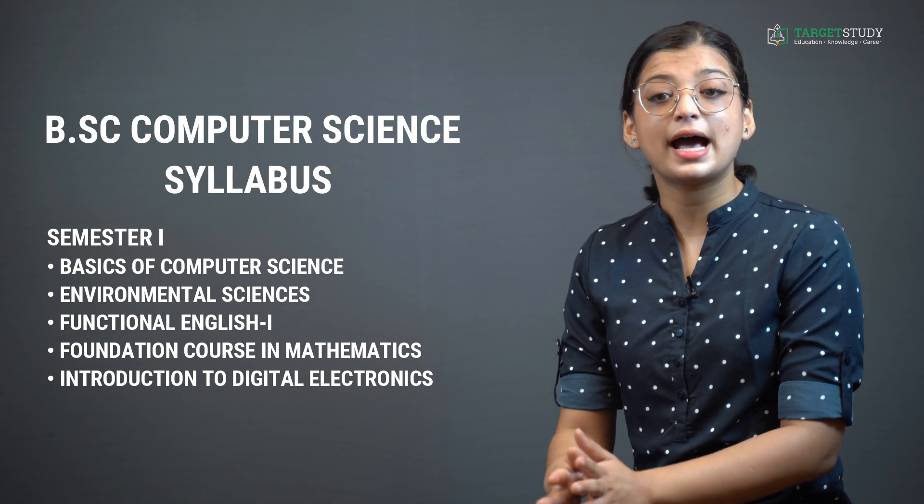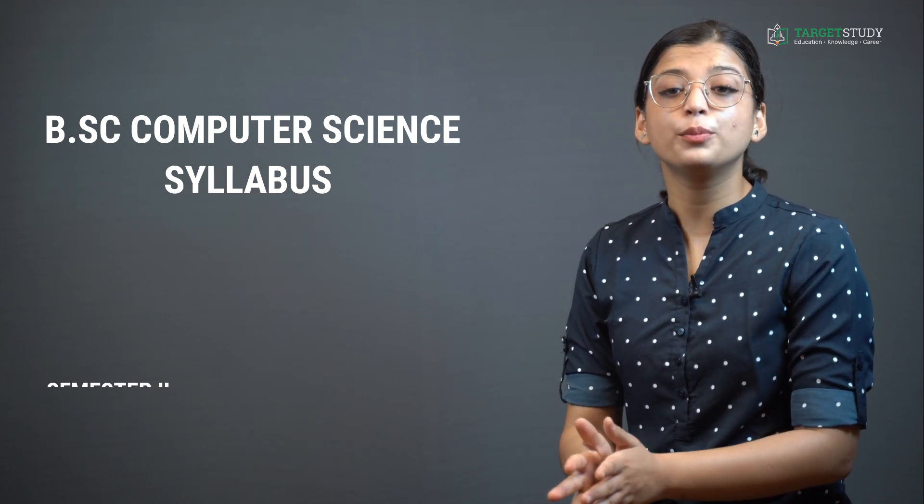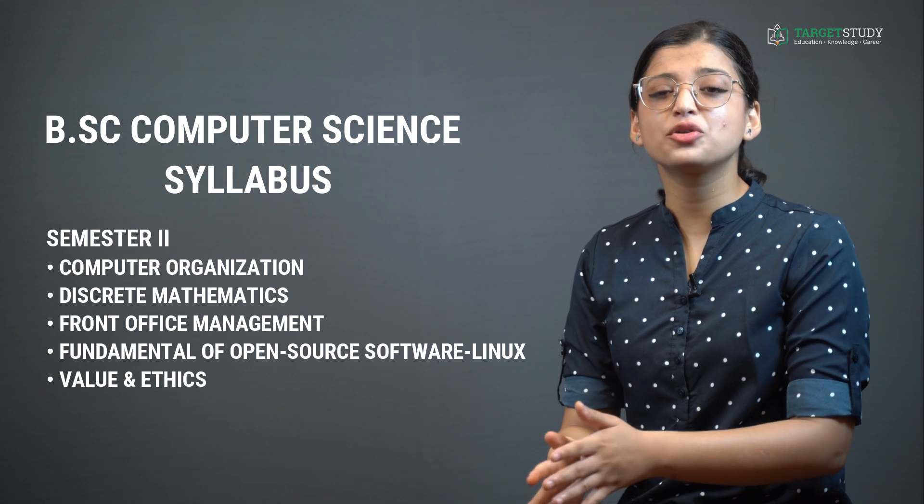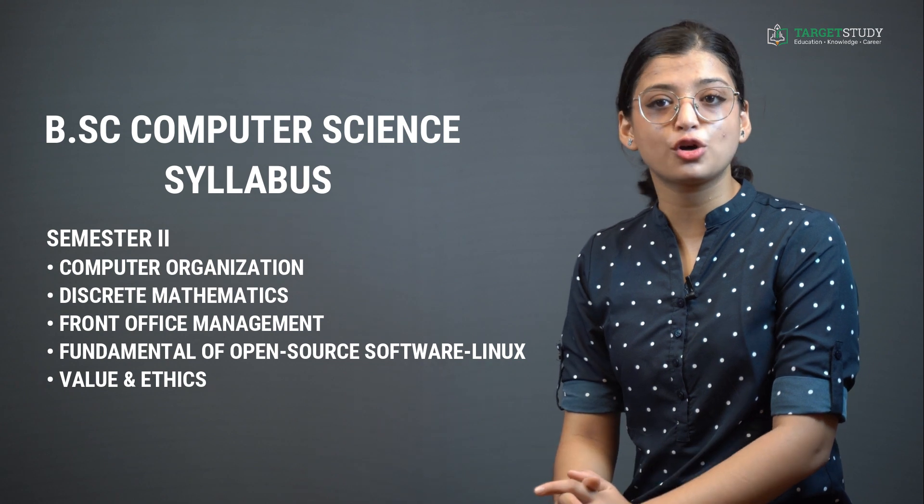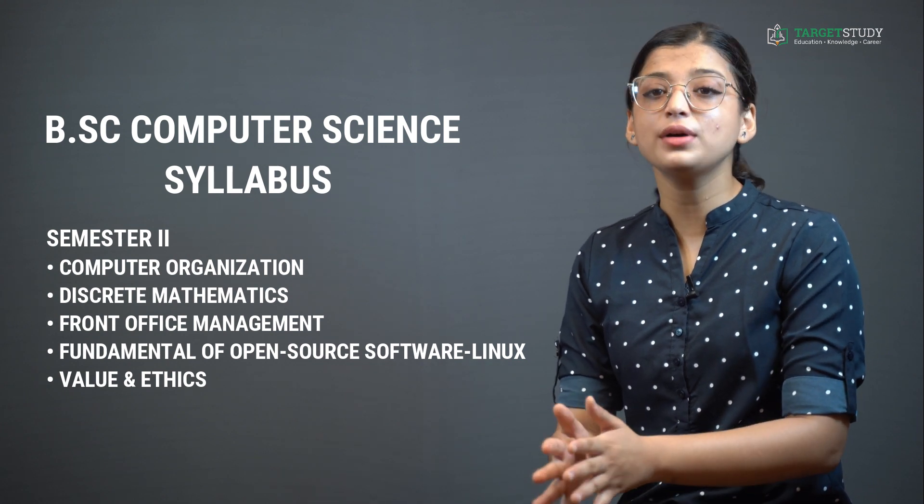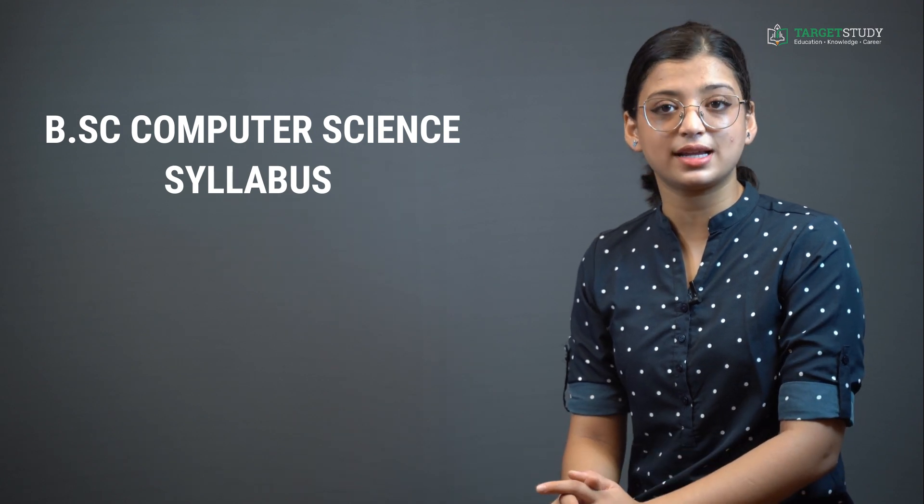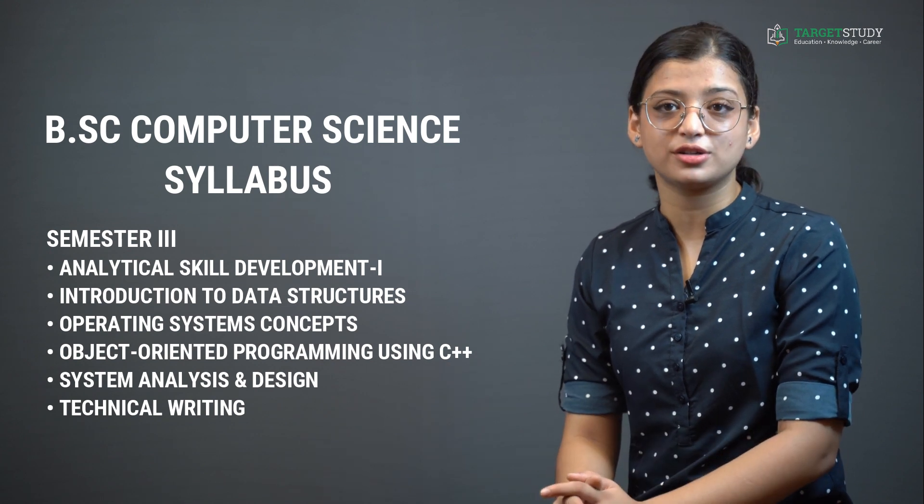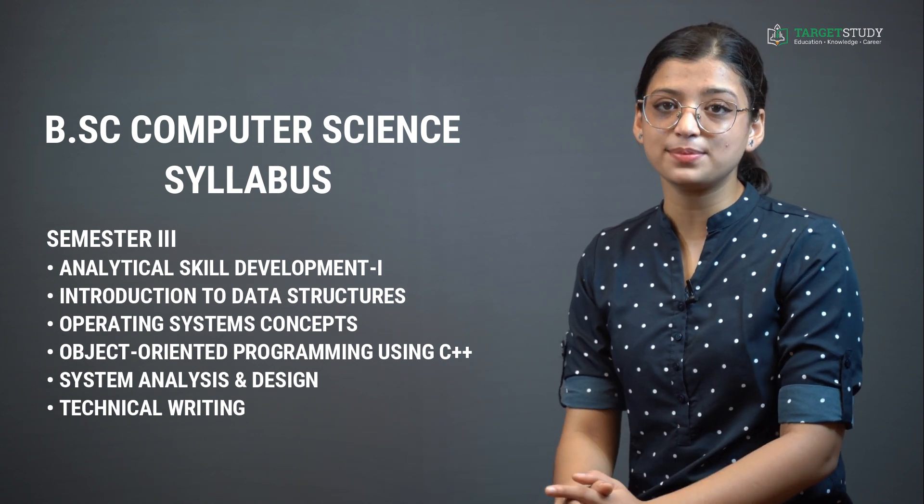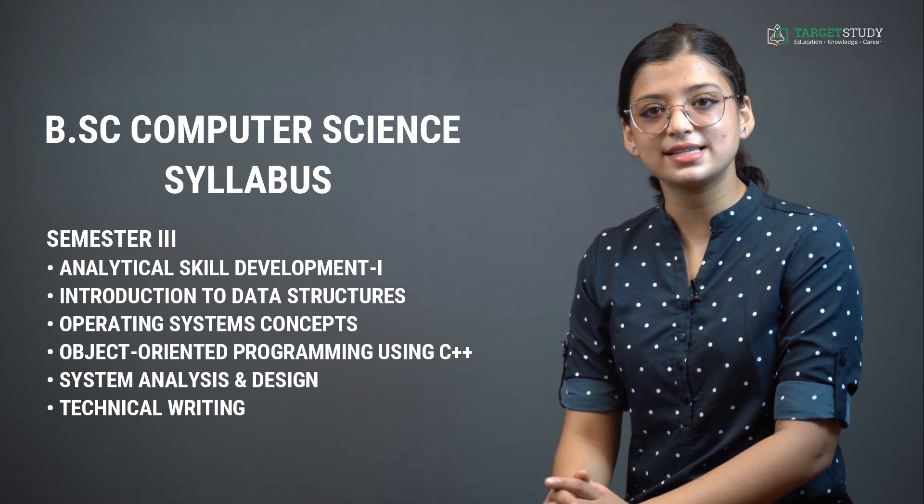Whereas B.Sc Computer Science semester 2 consists of subjects like Computer Organization, Discrete Mathematics, Front Office Management, Fundamentals of Open Source Software Linux, and Value and Ethics. B.Sc Computer Science semester 3 usually consists of subjects like Analytical Skill Development 1, Introduction to Data Structures, Operating System Concepts, Object Oriented Programming using C++, System Analysis and Design, and Technical Writing.